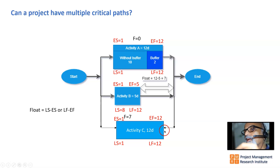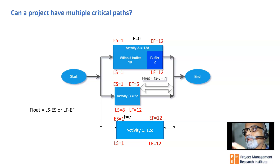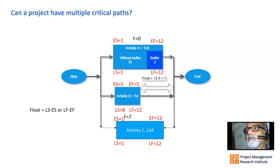Now if Activity C has a duration of only 11 days, its float becomes just one day. Technically Activity C is not on the critical path, but because the float is very small it is a near-critical path item and must be tracked closely — any slippage beyond one day will impact the project end date.